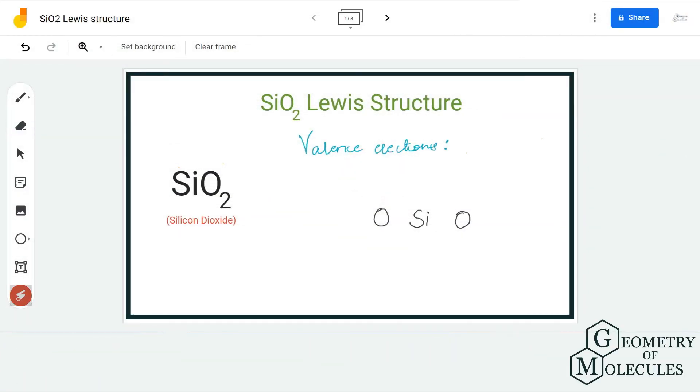Hi guys, welcome back to our channel. In today's video we are going to help determine the Lewis structure for SiO2 molecule. It's a chemical formula for silicon dioxide, and to determine its Lewis structure we first need to